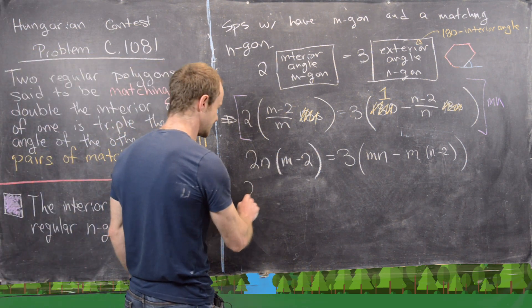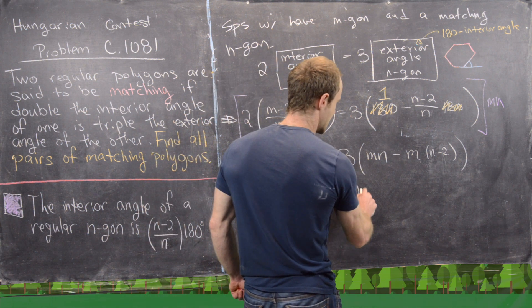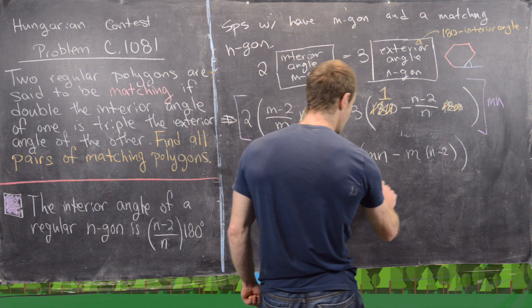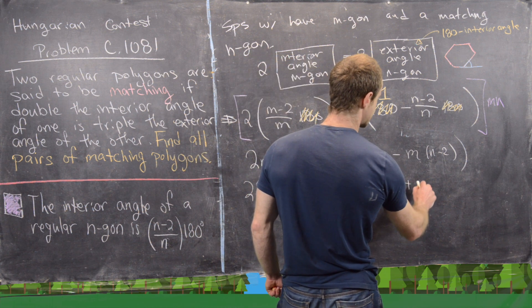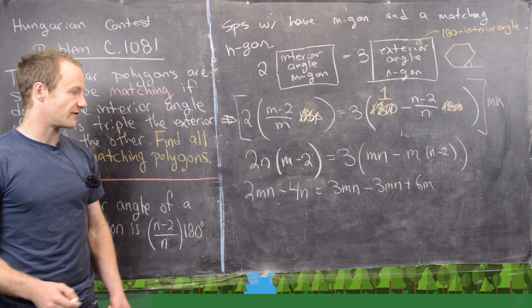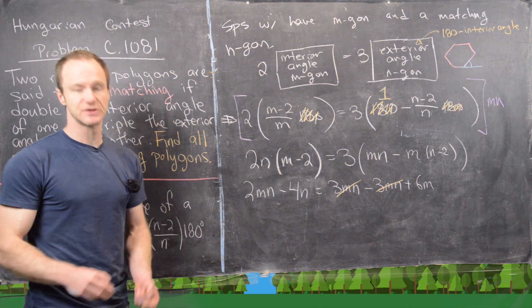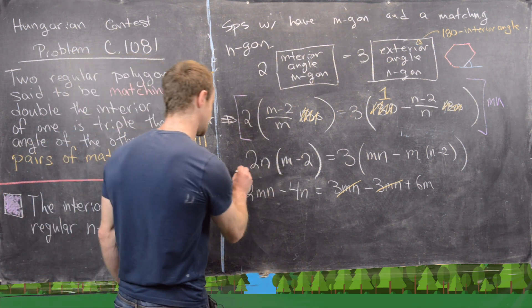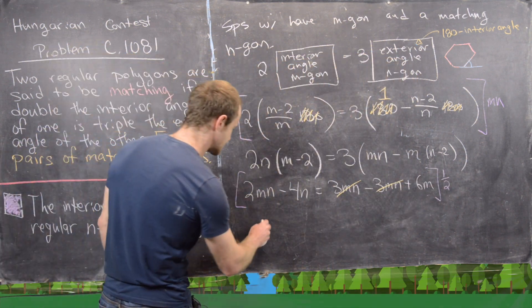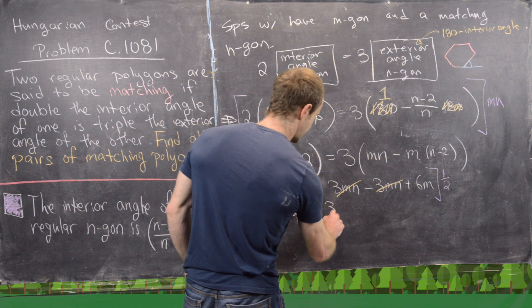But now let's go ahead and simplify this. That's going to be 2mn - 4n equals 3mn minus another 3mn plus 6m. So notice this guy and this guy cancel. And then also notice we've got a greatest common factor in all of these terms of 2, so I can multiply this entire thing by a half to simplify.